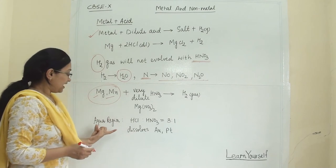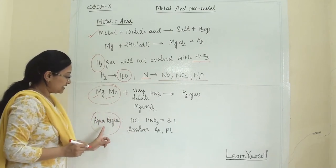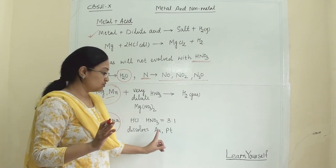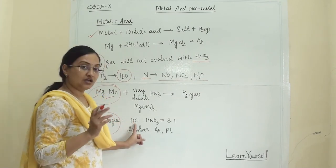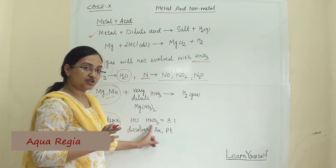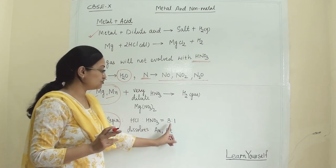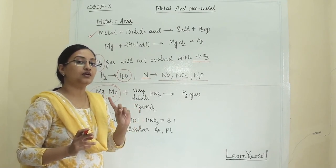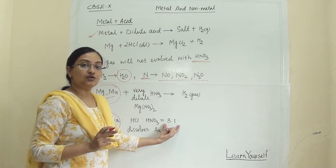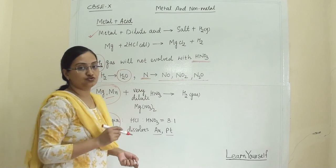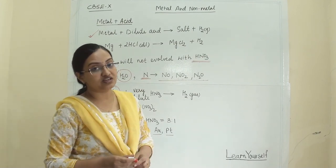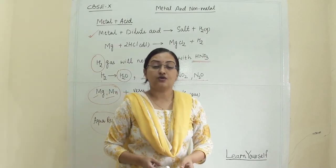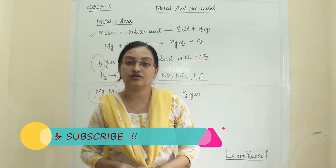Aqua regia is an important term. When we need to dissolve metals that are not very reactive — such as gold and platinum — we prepare aqua regia, which is a mixture of concentrated hydrochloric acid and concentrated nitric acid in a ratio of 3:1 (three parts concentrated HCl to one part concentrated HNO₃). This mixture can dissolve gold and platinum, which are otherwise very least reactive and not easy to dissolve using normal acids.